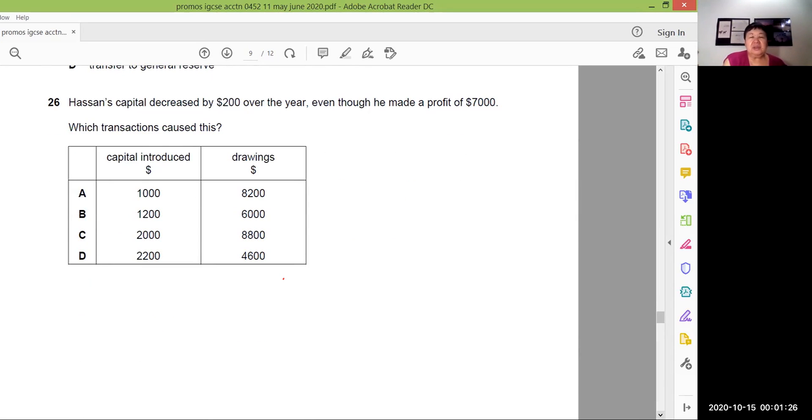Let's look at question 26. Hassan's capital decreased by 200 over the year, even though he made a profit. So which transactions caused this? So what I would like to point out to you is this. I need to annotate. His capital decreased by 200 over the year. So I'll be very careful. I'll do this closely, carefully.